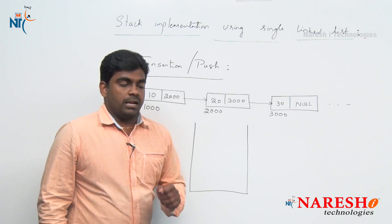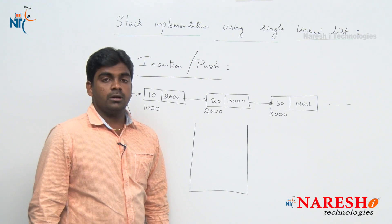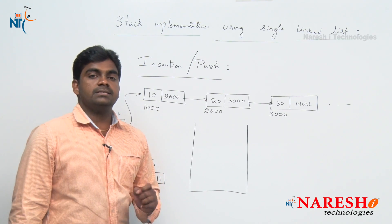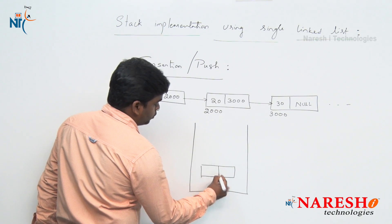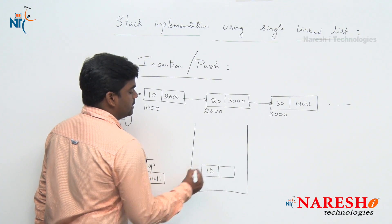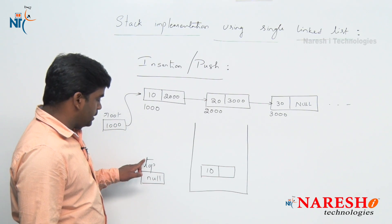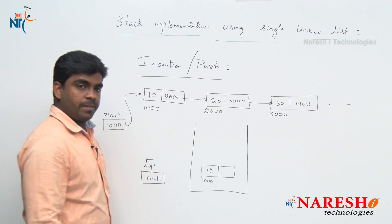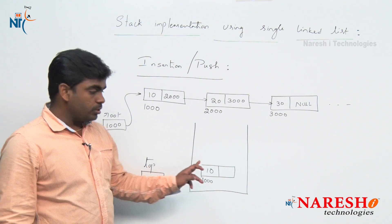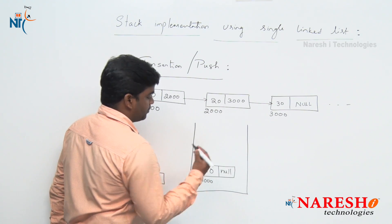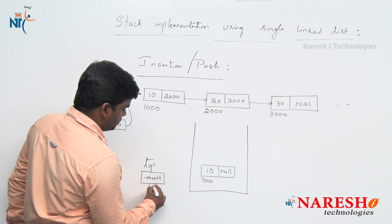Initially, top is pointing to null - that means no nodes in the single linked list. Now I want to insert a node. Observe very clearly: node data is 10, and the link value - inside the link value we have to store the top value. The top value is null, so null we are storing into the link, and the newly created node address 1000 we are storing into top.